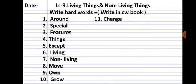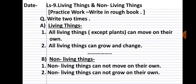Now for homework: write all these words in your CW book with good handwriting. Number 1: around, 2: special, 3: features, 4: things, 5: except, 6: living, 7: non-living, 8: move, 9: bone, 10: grow, 11: change. Write the date, the lesson name, and lesson number.